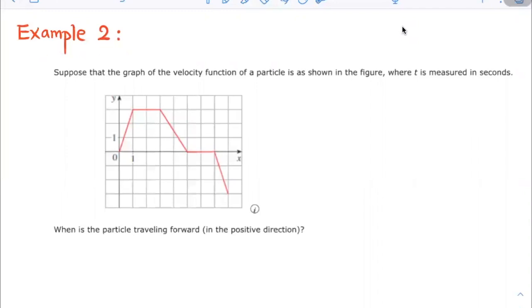Sample 2. Suppose the graph of the velocity function of a particle is as shown in this figure, where t is measured in seconds. When is the particle traveling forward, which means in the positive direction?